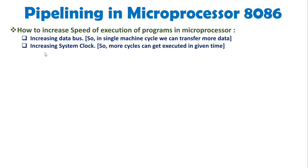When we talk about increasing speed using the system clock, as you increase the crystal clock frequency, you will be executing instructions faster. The reason is that the time per single T-state will decrease.